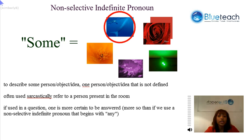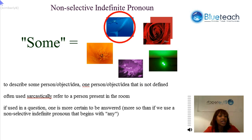As I mentioned in the topic on 'any,' the non-selective indefinite pronouns beginning with 'any' and 'some' are similar but different. When you use 'any,' it's not sure that you are referring to something specific. If you ask a question using 'any,' you're not sure that you will have a response or that the thing you're asking about actually exists. When you use 'some,' it is much more definite — it refers to an actual thing that exists, but it's not clearly defined.